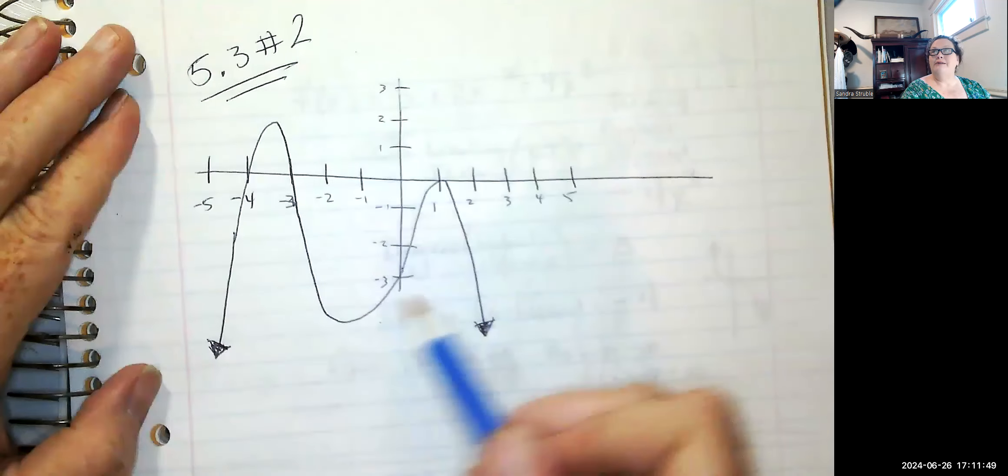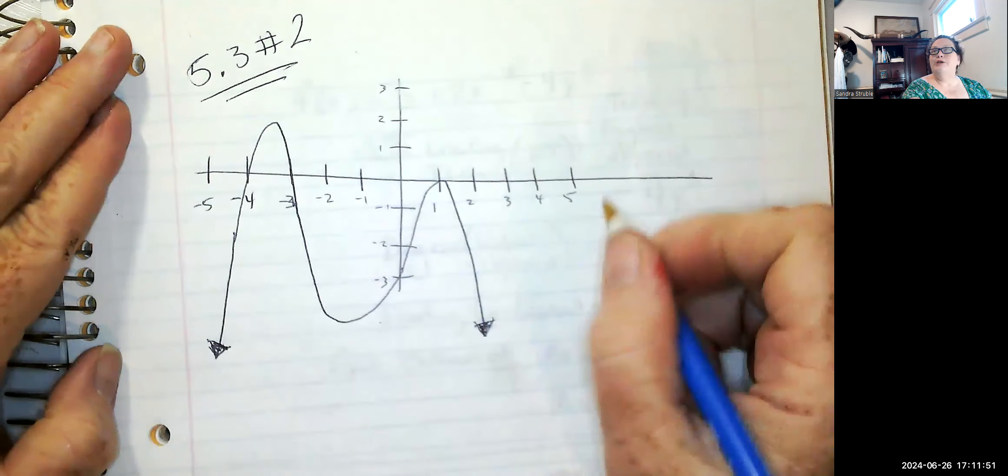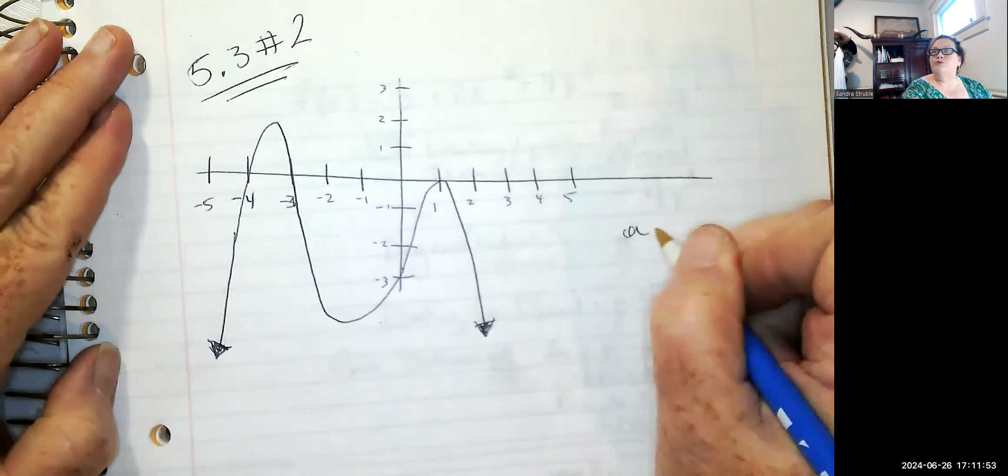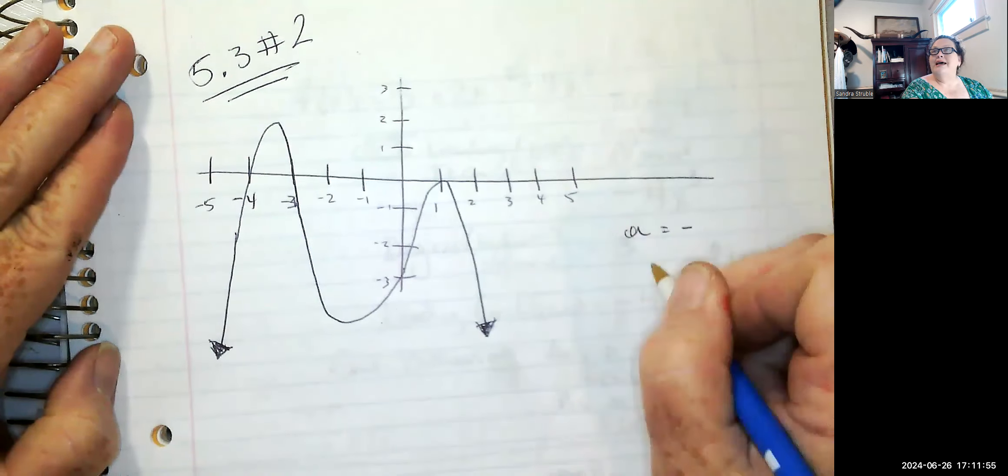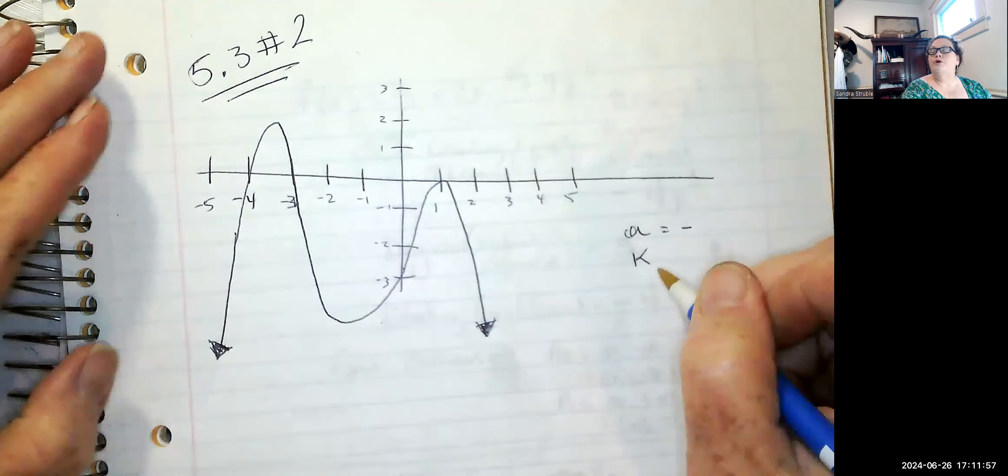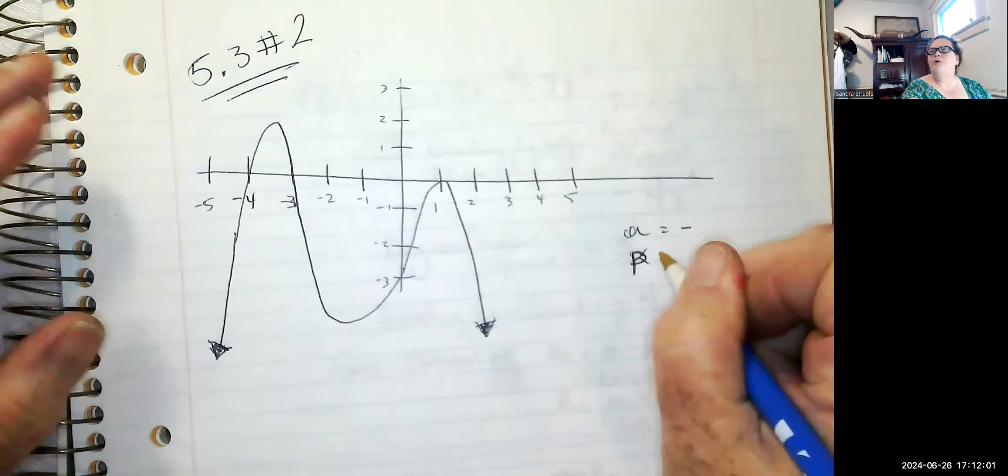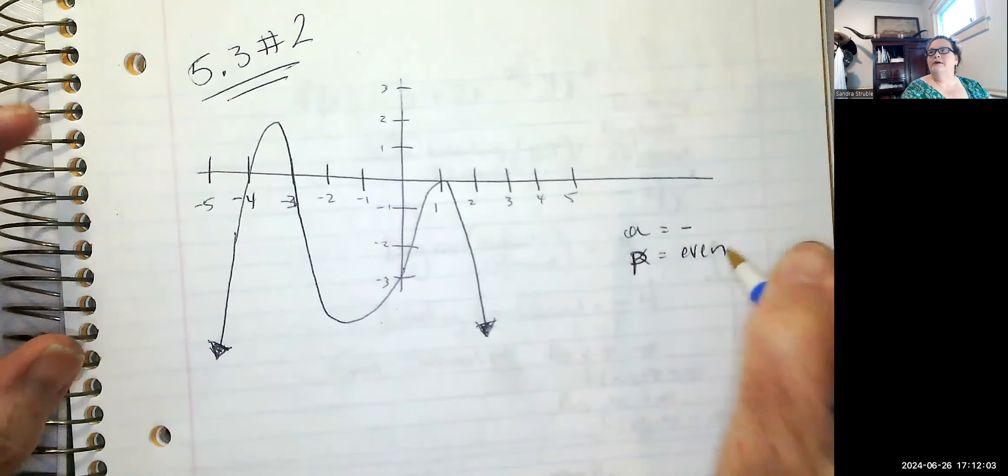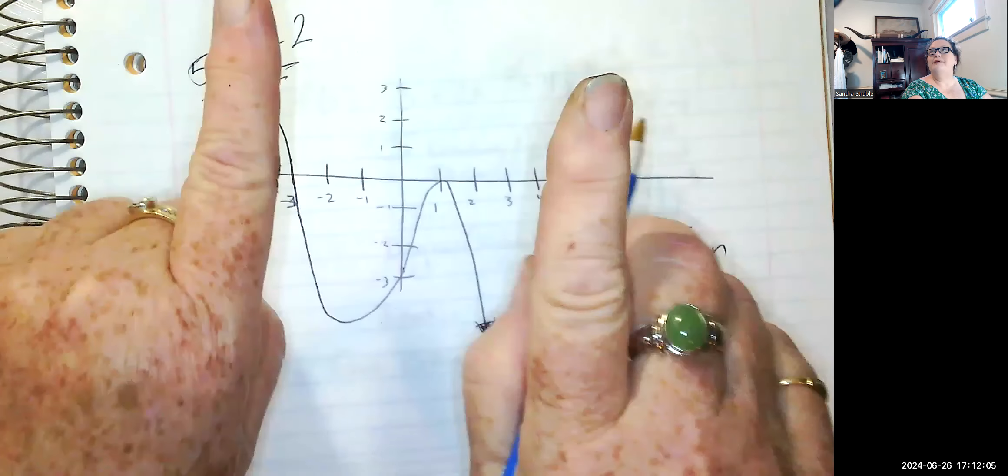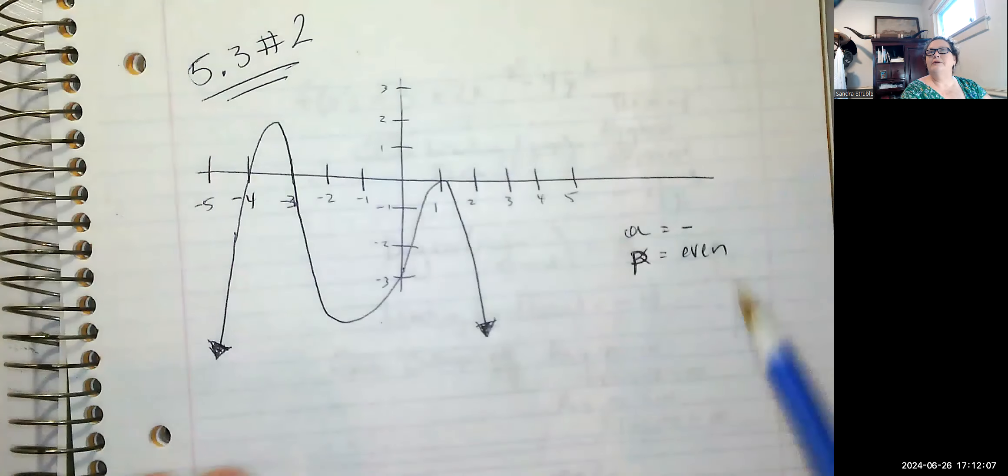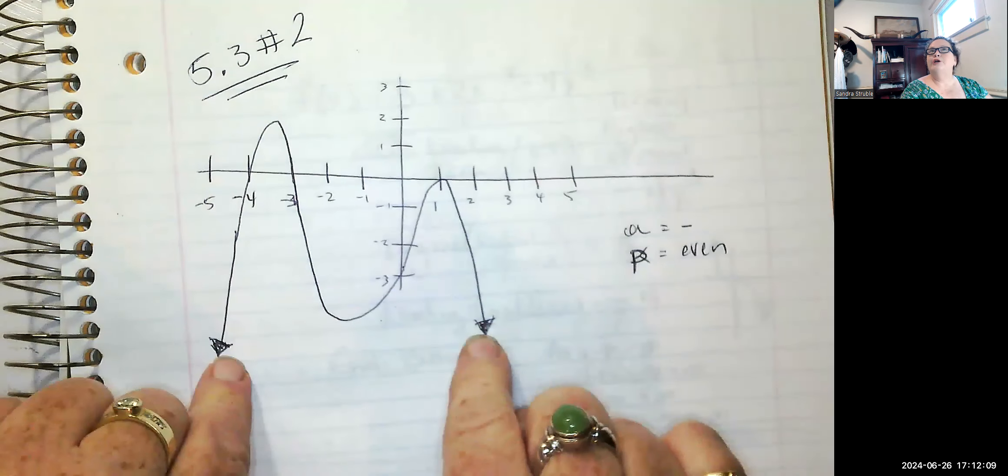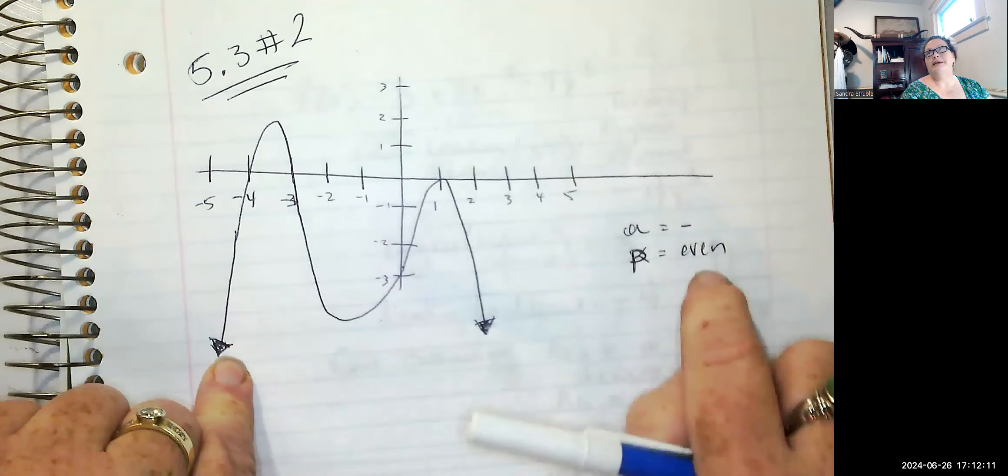When you have something like this, that means that your A is going to be a negative number and your K or your exponent, let's put it as P, your power, is going to be even. Because if it was both pointing up, it would be positive and even. Because they're both pointing down, your degree has to be an even number.